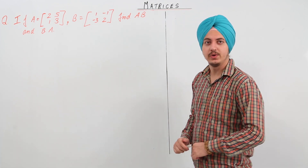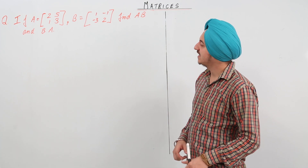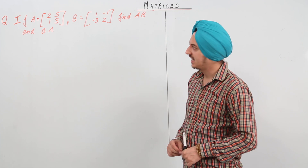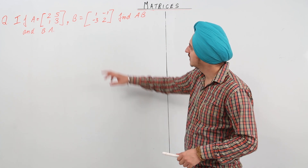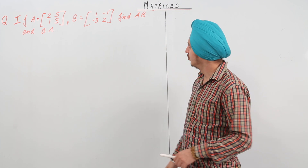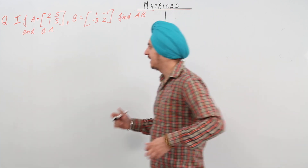In this question we have A equal to [2, 5; 1, 3] and B equal to [1, -1; -3, 2]. We need to find AB and BA.